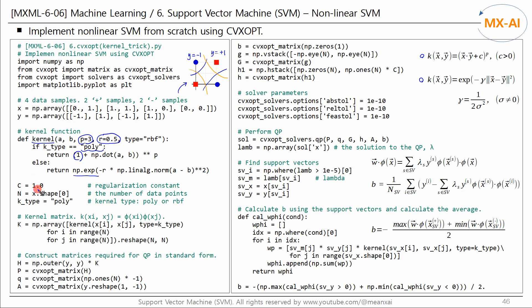The constant C is set to 1.0 and we use a polynomial as the kernel function. Next, we create the kernel matrix, and as defined previously, construct the matrices to be input into the standard QP format. We then input these matrices into the QP function of CVXopt to find the solution to the dual function. The final solution — the lambdas — are contained in this variable.